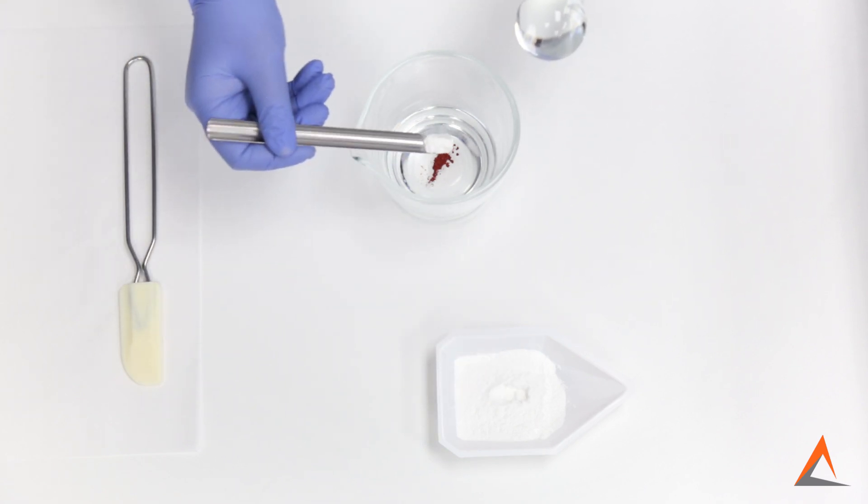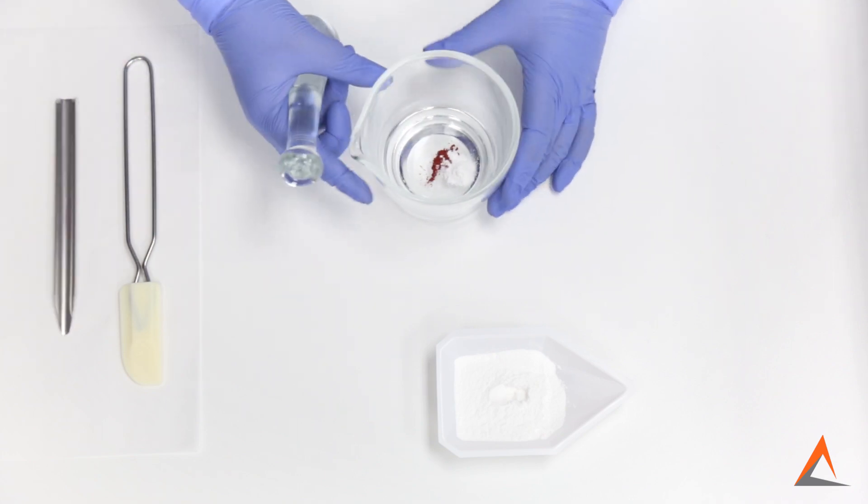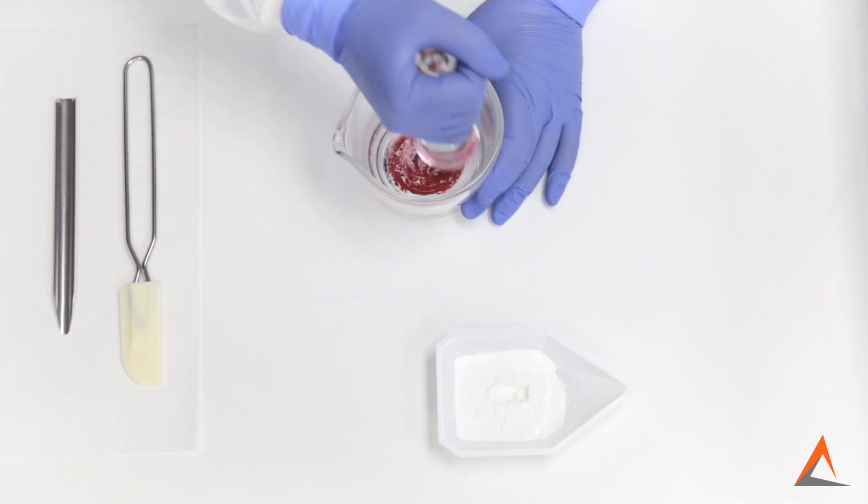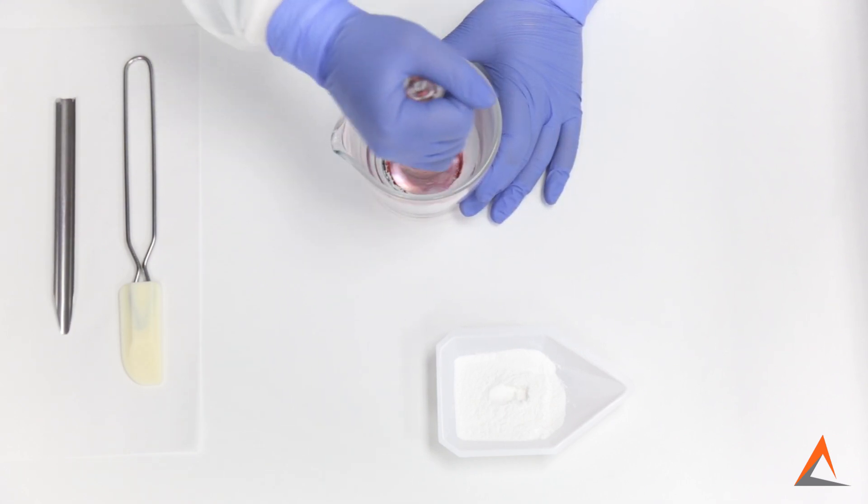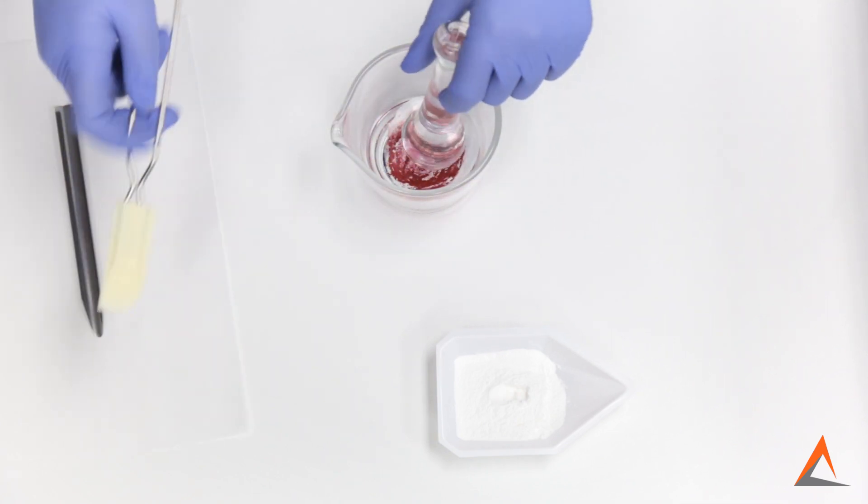This quantity does not need to be exact and can be eyeballed. Once we have approximately equal quantities of both powders, we're going to go ahead and triturate the powders. While triturating, we're mixing our powders very well but also trying to reduce particle size to get a fine, homogeneous powder.